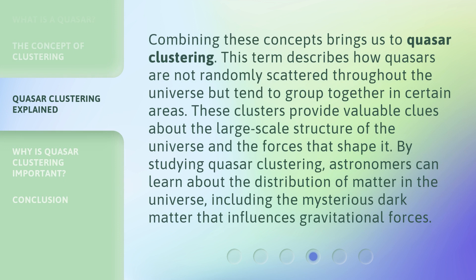Combining these concepts brings us to quasar clustering. This term describes how quasars are not randomly scattered throughout the universe, but tend to group together in certain areas. These clusters provide valuable clues about the large-scale structure of the universe and the forces that shape it. By studying quasar clustering, astronomers can learn about the distribution of matter in the universe, including the mysterious dark matter that influences gravitational forces.